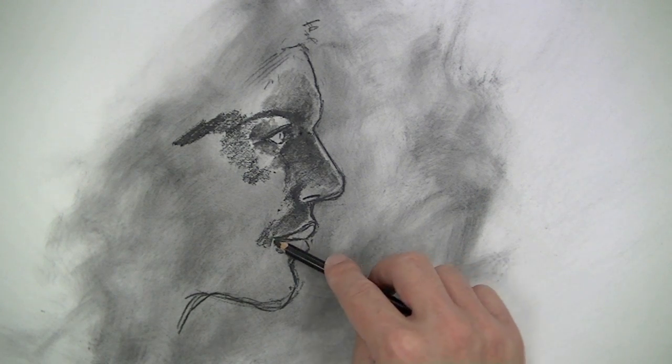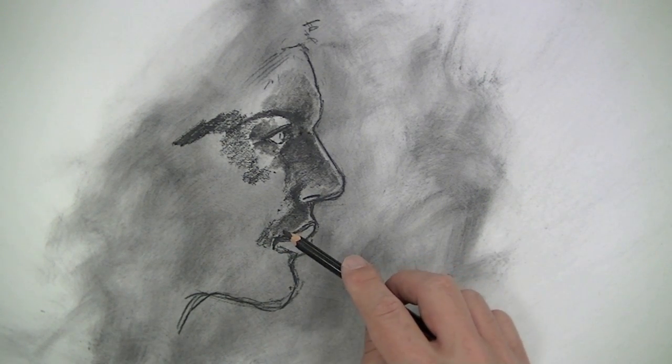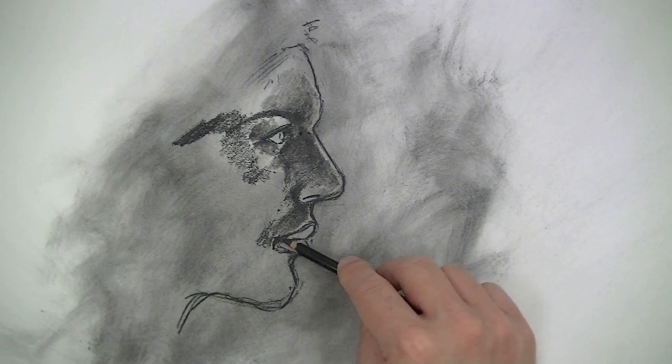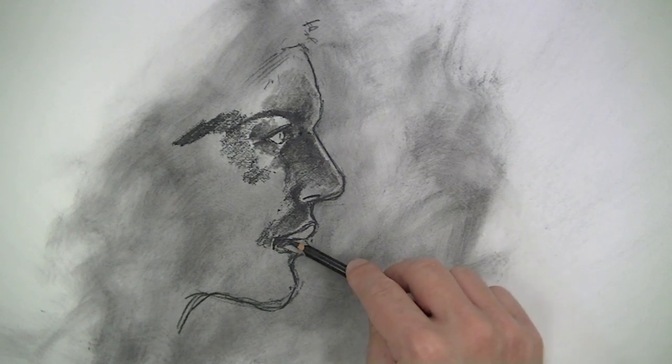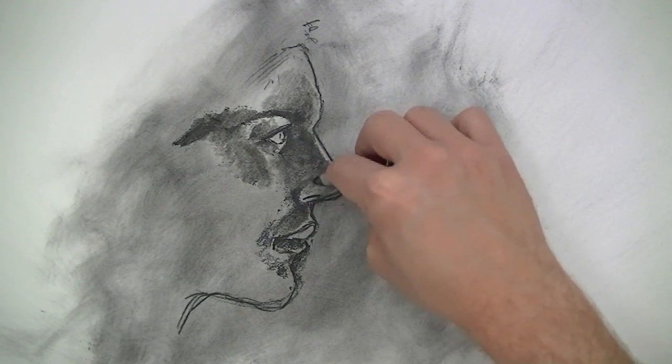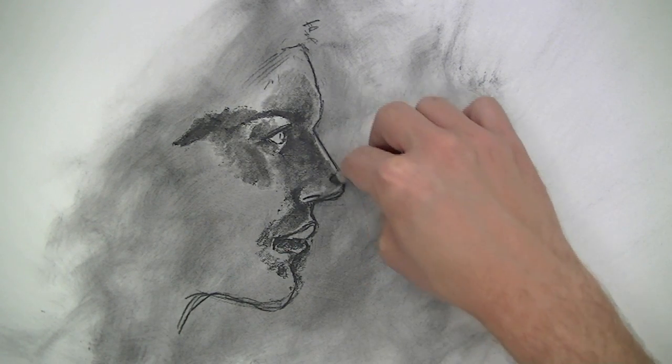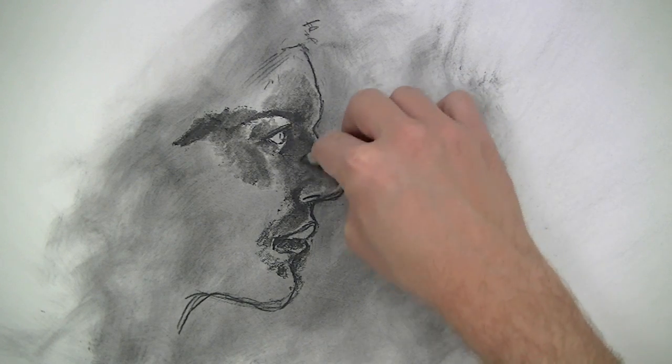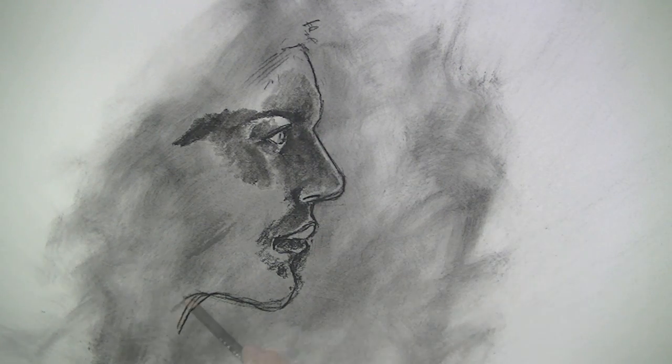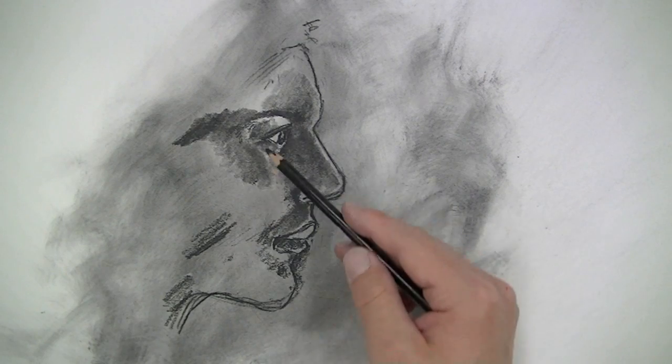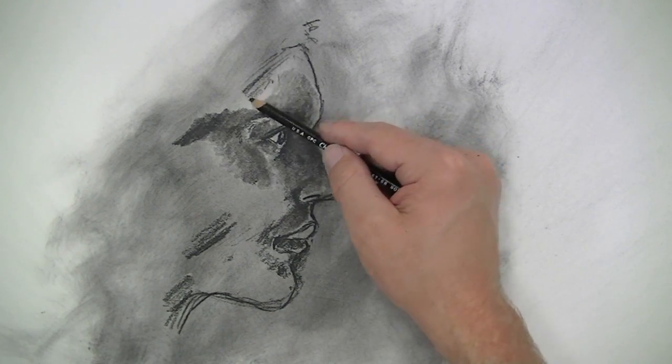I'm also going to apply the charcoal with the side of the charcoal pencil instead of the tip of the pencil. This will create smoother transitions or smoother areas of value instead of areas where you can see the lines. And once those areas are applied I can always go back to the blending stump and smooth out the transitions even further.